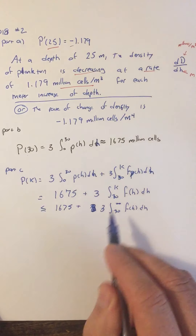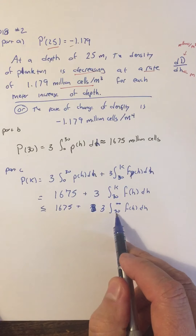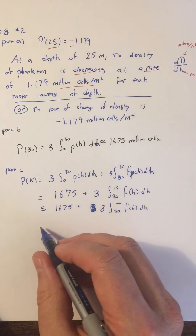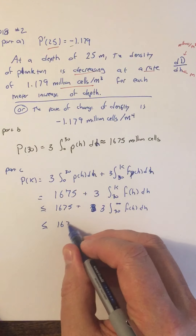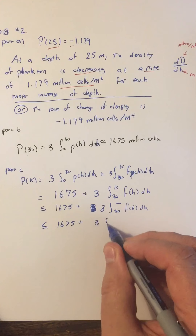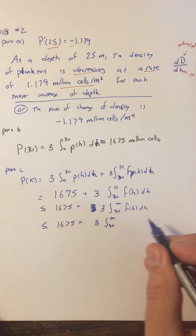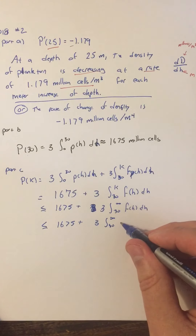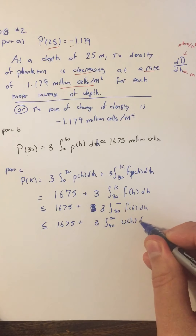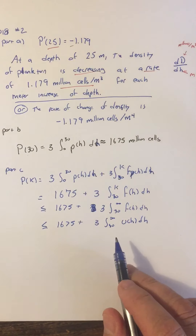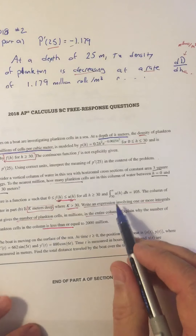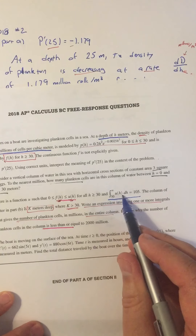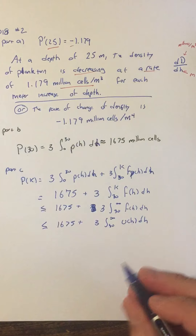The integral from 30 to k is less than the integral from 30 to infinity. Then, since f of h is less than u of h, we can replace f with u: so the expression is less than 1675 plus 3 times the integral from 30 to infinity of u of h dh. Now we have something we know a value for.